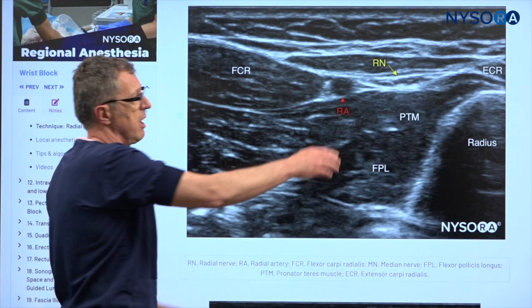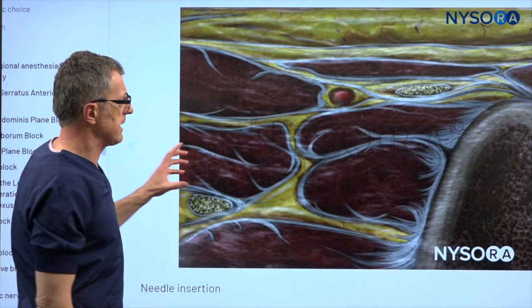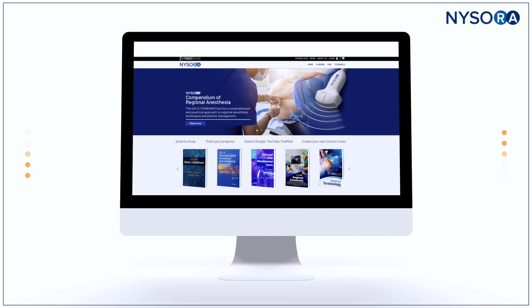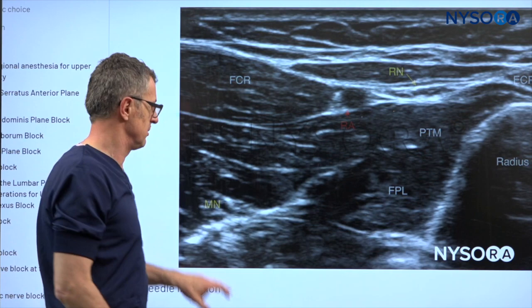As you scan more distally, eventually the superficial radial nerve would go over the radial bone — we'll see that later. That's the reverse ultrasound anatomy, again an incredibly powerful tool to learn sono-anatomical patterns. Going back and forth between the ultrasound image and the reverse ultrasound anatomy ingrains those patterns so we know what to expect every time we position a probe on a patient.